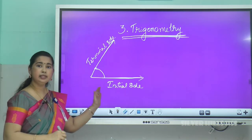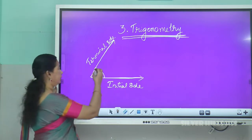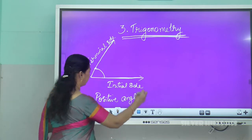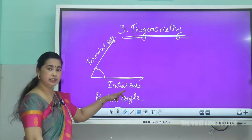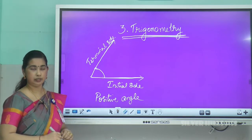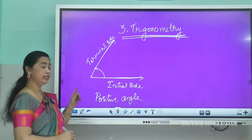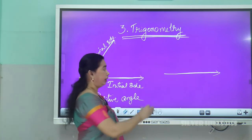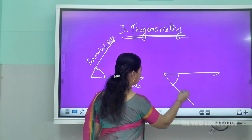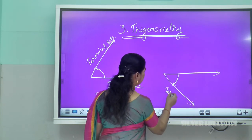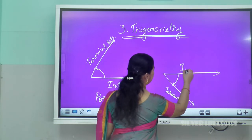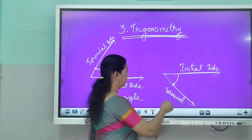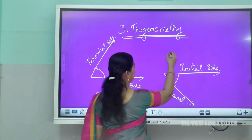If the ray is rotating in the anticlockwise direction from the initial side and reaches the terminal side, we call it a positive angle. Similarly, if the ray rotates in the clockwise direction from the initial side and reaches the terminal side, we call it a negative angle.